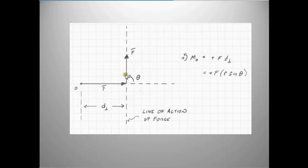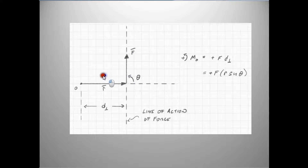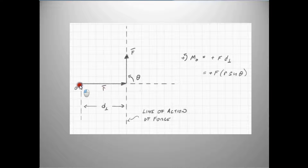If we take a force vector and apply it at some point on a body, and then at another point in the body — say we put a nail through a body here — and we want to know what kind of rotation this force is going to apply to that body, or the amount of torque that is going to be applied, this force acting at the perpendicular distance from the line of action of the force to point O.